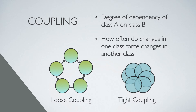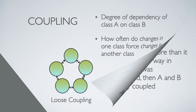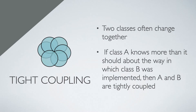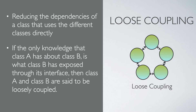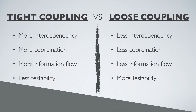Now let's understand the difference between loose coupling and tight coupling. In tight coupling, two classes often change together — when you make some changes in class B, you may have to make corresponding changes in class A too. In loose coupling, there is less dependency between the classes. Class A doesn't know about the implementation details of class B; the only knowledge class A has about class B is what class B has exposed through its interface. Tight coupling has more interdependency, coordination, and information flow, whereas loose coupling has more testability.